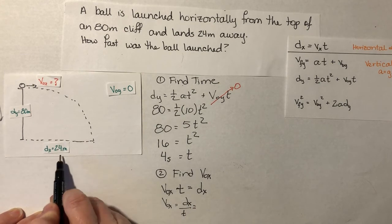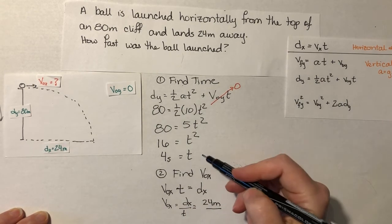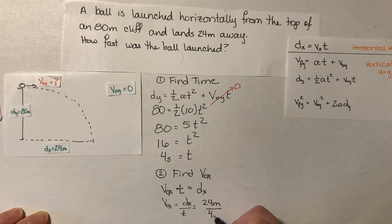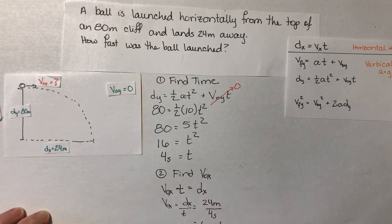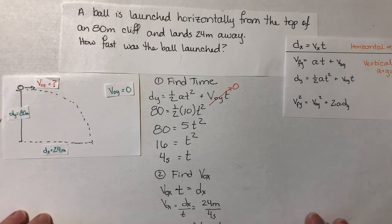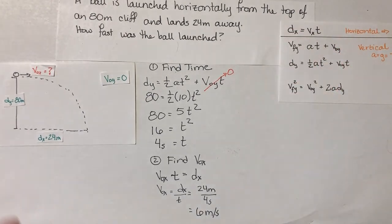That's going to be 24 meters for dx, 4 seconds for t. 24 divided by 4 is 6 meters per second. Meters over second gives me meters per second. So my final answer for this problem is that the ball was launched with a horizontal velocity of 6 meters per second. I hope that's helpful.